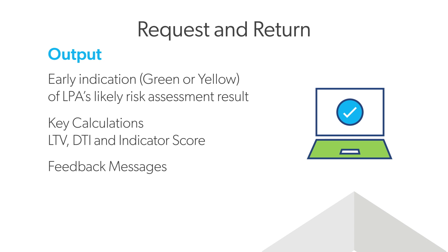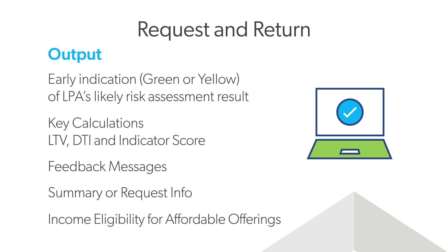To support lender automation, key lender input data will be returned, including the loan amount, total monthly income, and estimated property value. To help determine if borrowers qualify for Freddie Mac affordable loan programs, certain affordable eligibility indicators are also returned.